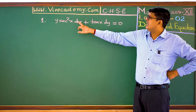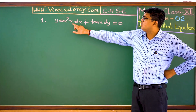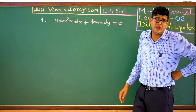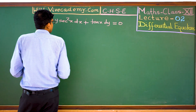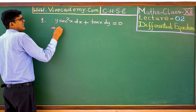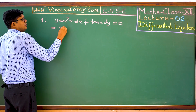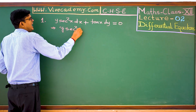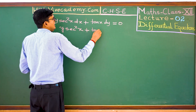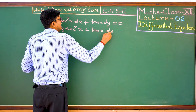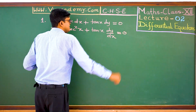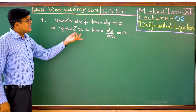Now, how do you want to do it? Divide through by dx. So the differential equation becomes: y²x + tan x · (dy/dx) = 0.